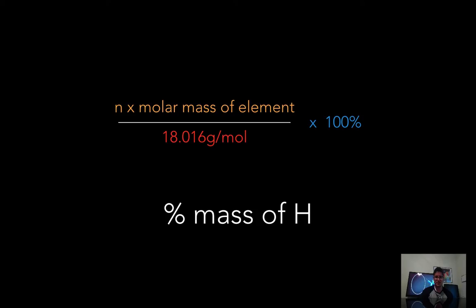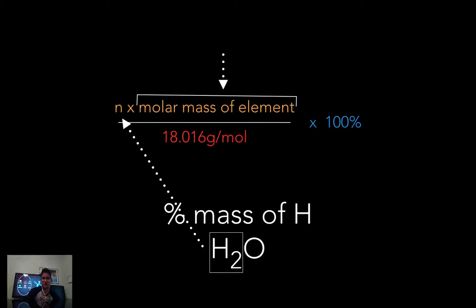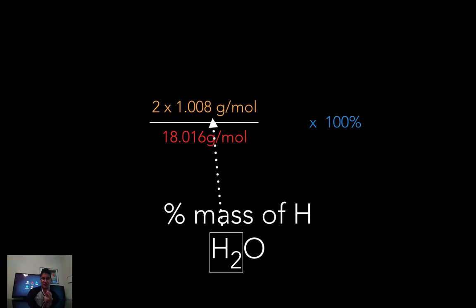Let's go ahead and find the percent mass of hydrogen so you can see how this works out. There's two components to the numerator. The n number represents the number of atoms in that ratio, and then you multiply that by the molar mass of that element. So if I look at H2O, I see H2, so that means there's two hydrogens, so that n is two. And then my molar mass is 1.008 grams per mole for hydrogen. So one hydrogen element has a mass of 1.008 and I have two, so I multiply it by two. That's 2.016 grams per mole.